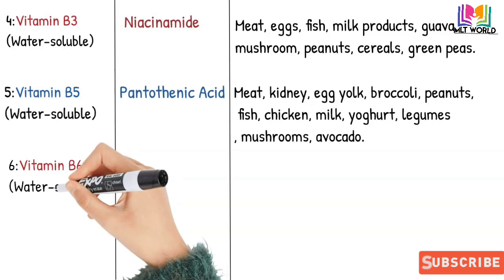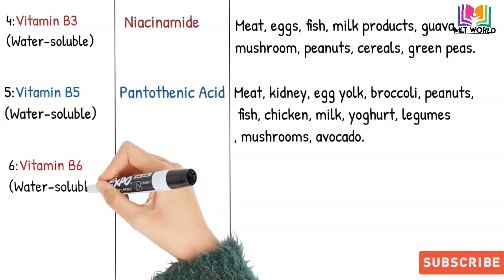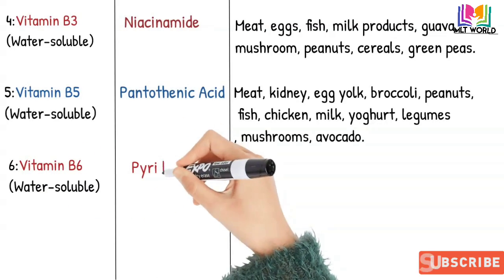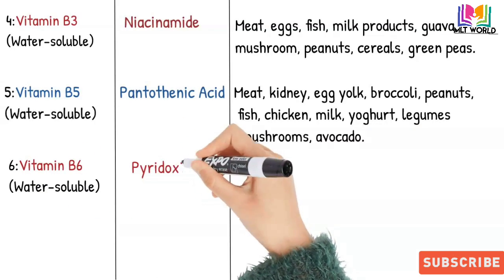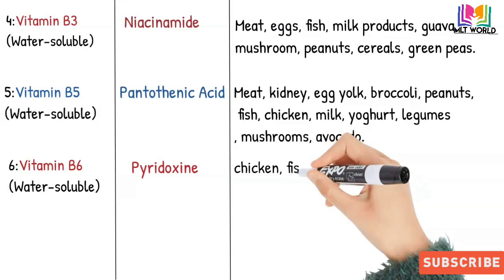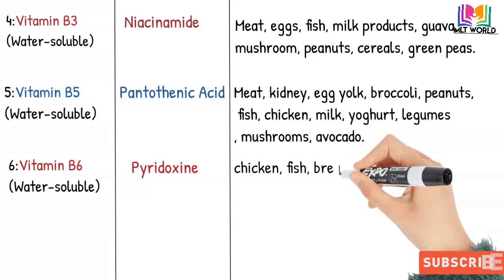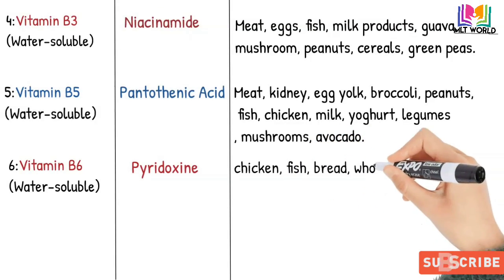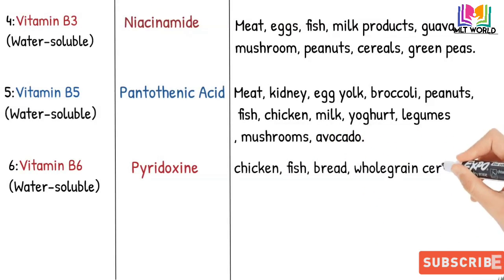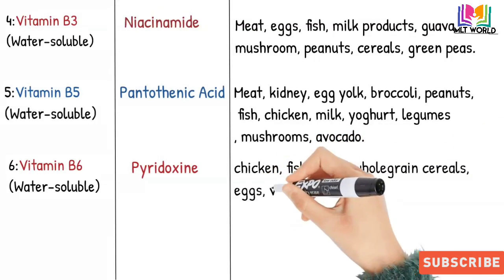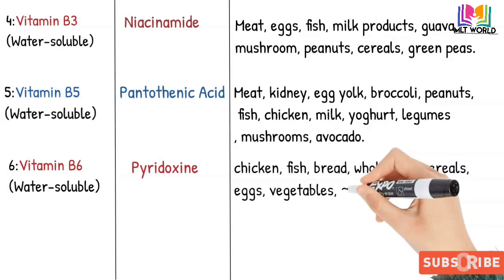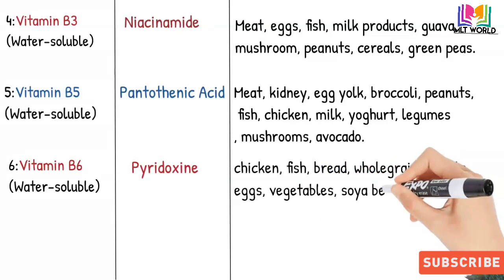Next is Vitamin B6, which is also water-soluble. All of B1, B2, B3, B5, and B6 come under B complex vitamins. The scientific name of B6 is pyridoxine. Sources include chicken, fish, bread, whole grain cereals, eggs, vegetables, and soybeans.